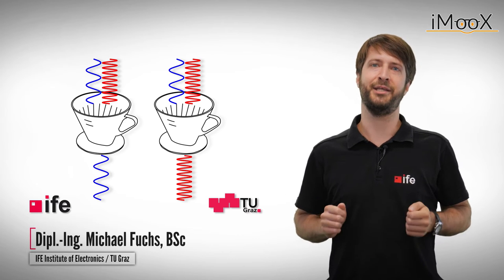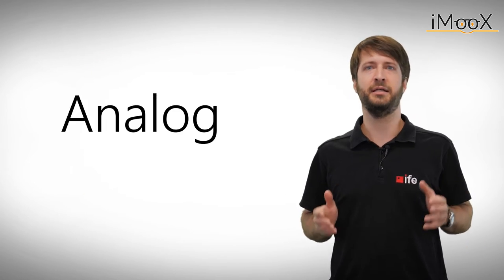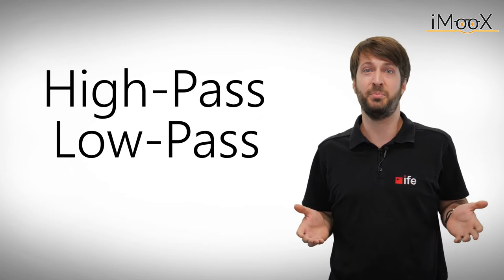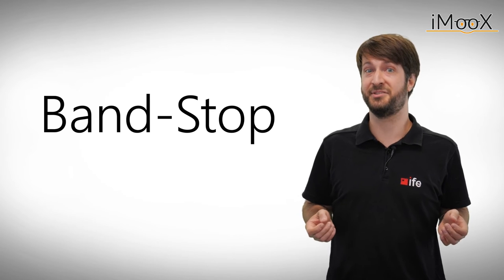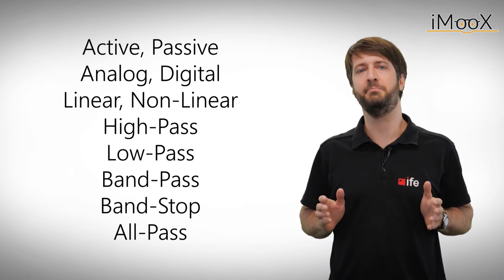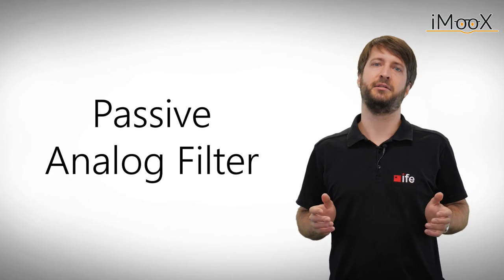Electronic filters come in a variety of different forms. They can be active, passive, analog, digital, linear, non-linear, high pass, low pass, band pass, band stop, all pass. To get the hang of it all we want to start with one of the simplest and maybe most important circuits: the passive analog filter.